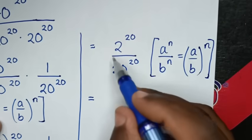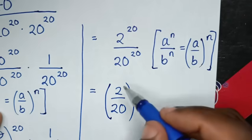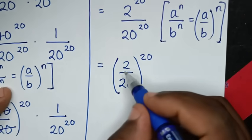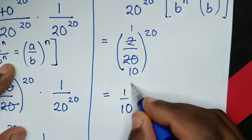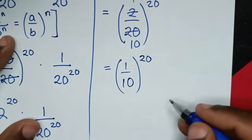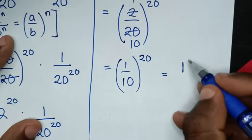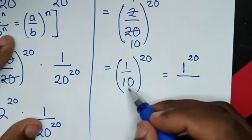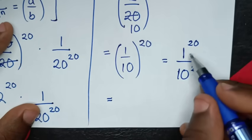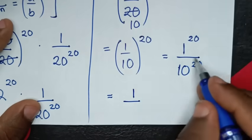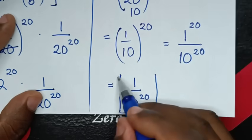So, it will be equal to 2 over 20, bracket power of 20, which is common. Now, to simplify: 2 cancels to give 1, and 20 cancels to give 10, so it will be equal to 1 over 10, bracket power of 20. Then, in the next step, we take power of 20 in the numerator and the denominator, so it will be 1 power of 20 over 10 power of 20. Since 1 power of 20 is 1, we get 1 over 10 power of 20, which is our final answer.